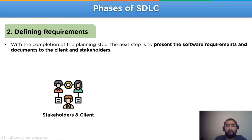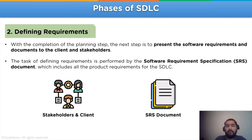Moving on, we have the second stage: defining requirements. With the completion of the planning step, the next step is to present the software requirements and documents to the client and stakeholders for verification that they are satisfied with the planned scenario. The task of defining requirements is performed using the software requirement specification document, also known as the SRS document, which includes all the data and information related to the product being developed.